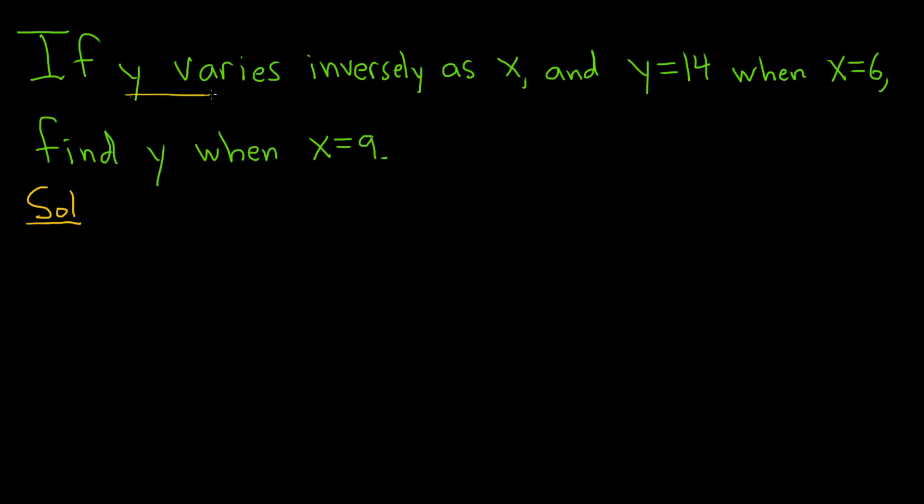So for example, y varies inversely as x. Okay, so what does that mean? That would mean that y is equal to k over x. Remember, inversely means you divide. If it says directly, then it's just k times x.